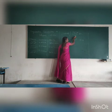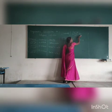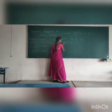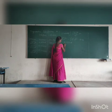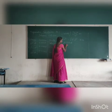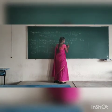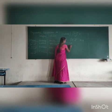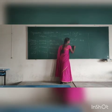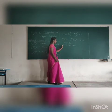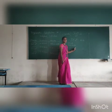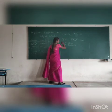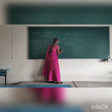We already know that x is equal to 3 sin theta, so we need to find dx. We differentiate x with respect to theta. So dx is equal to 3 cos theta d theta. Now substitute in the denominator values.